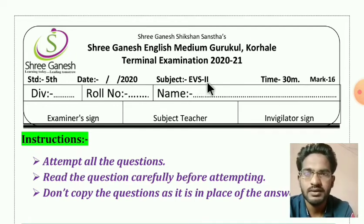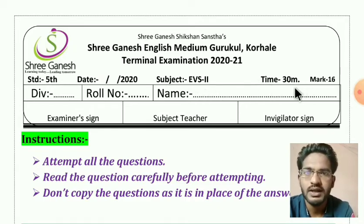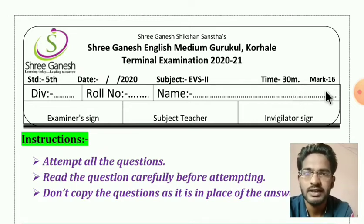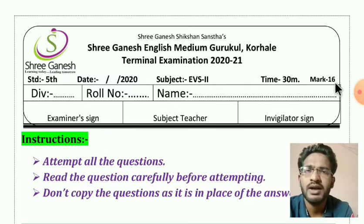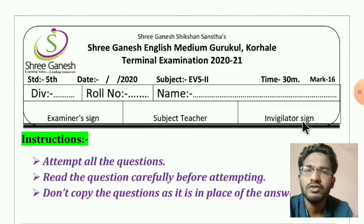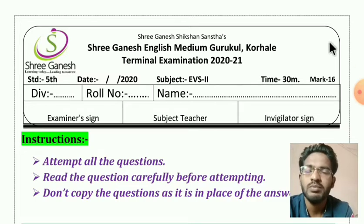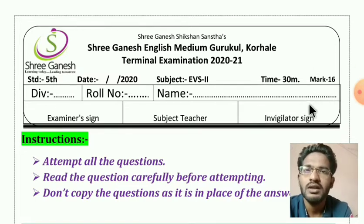Your subject is EVS Second, and for this paper the time given is only 30 minutes because this paper is of 16 marks. Other subject papers are of 40 marks. EVS First paper is of 24 marks and EVS Second paper is of 16 marks, so combined it will be 40 marks. On the result you will get a combined grade of both subjects.